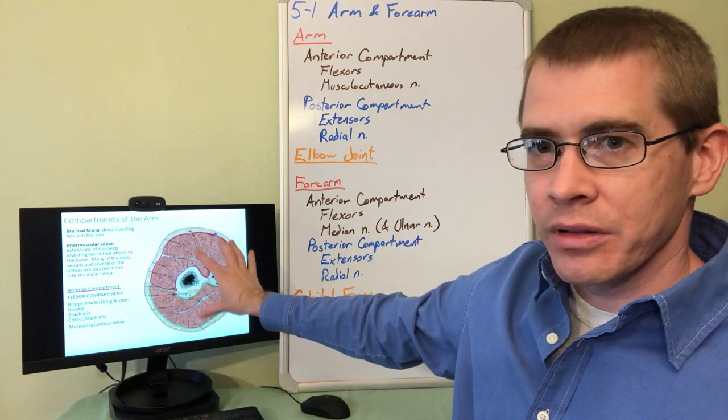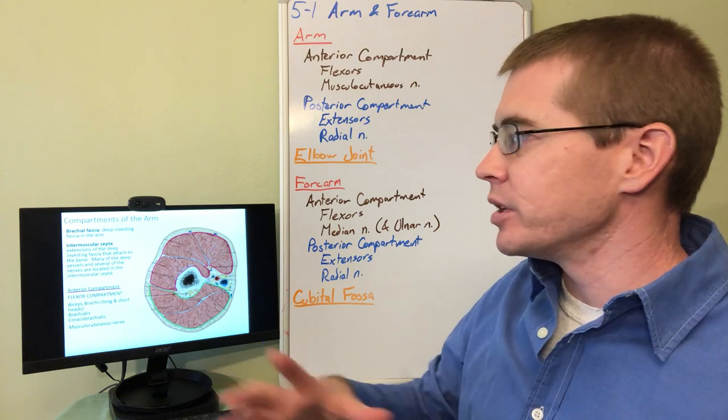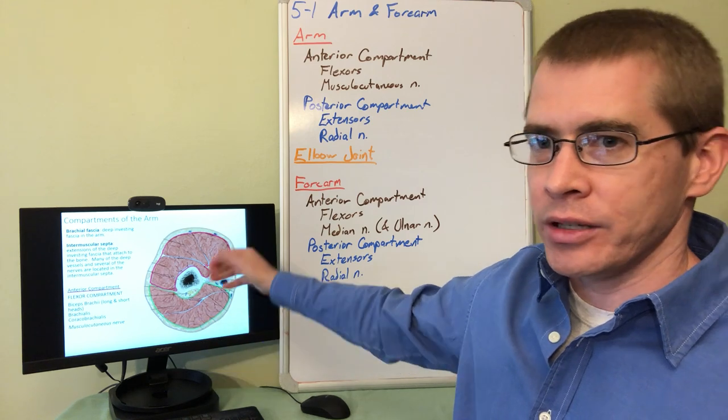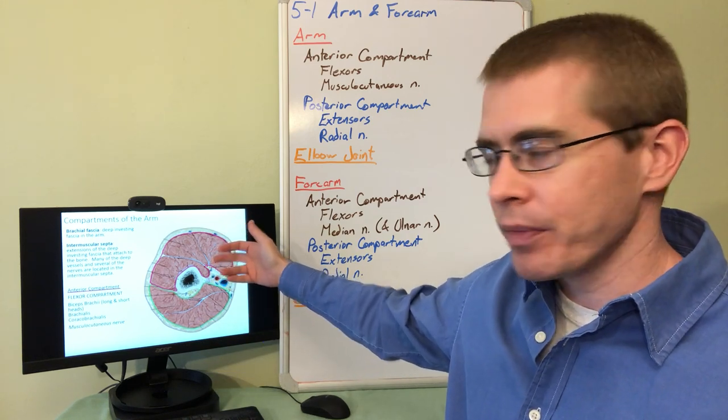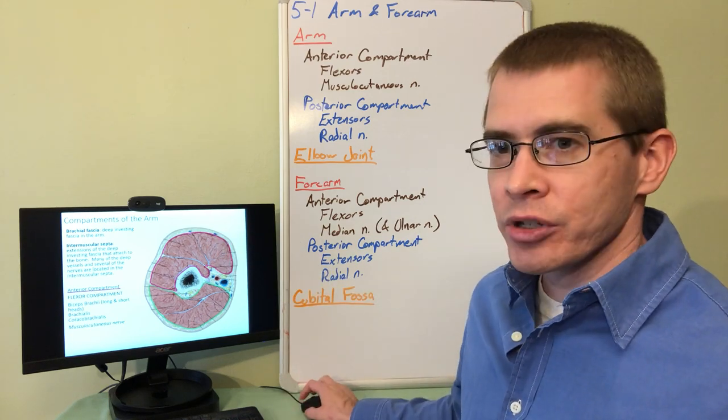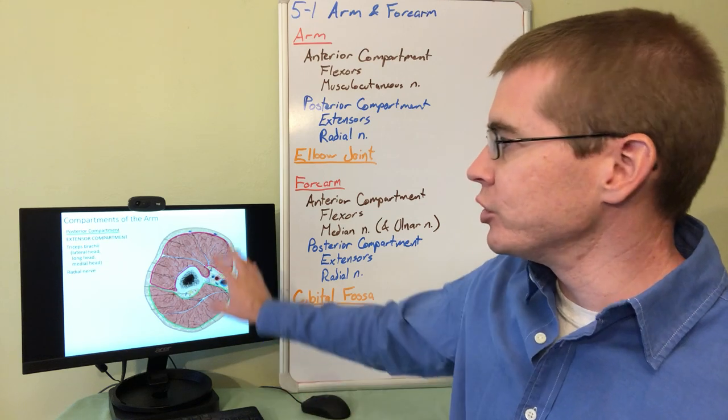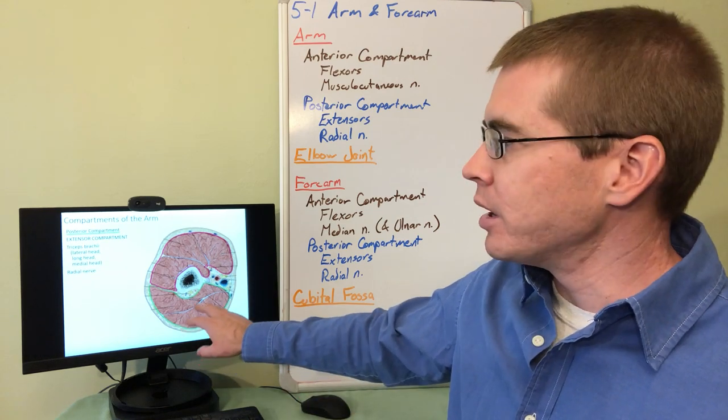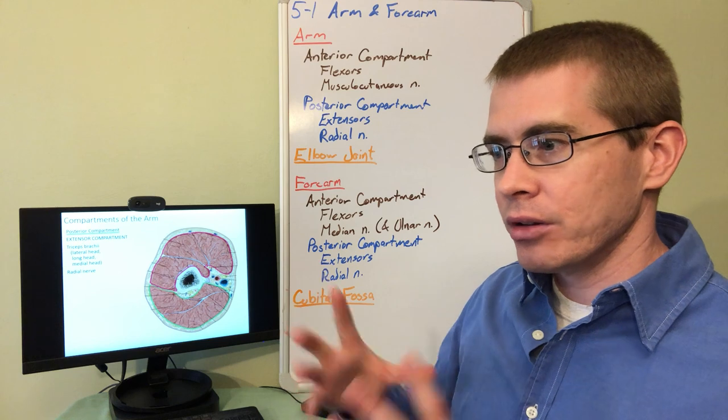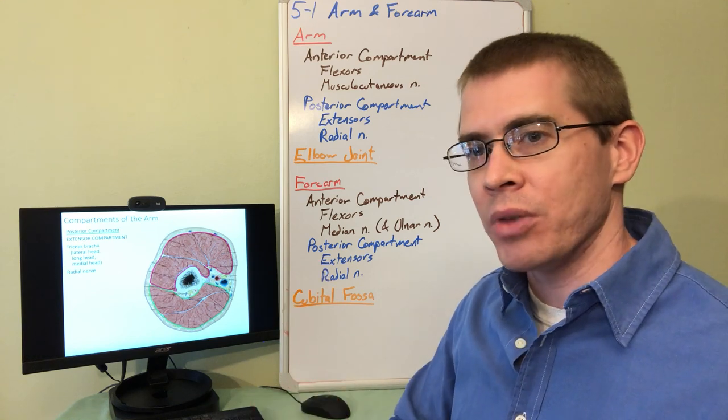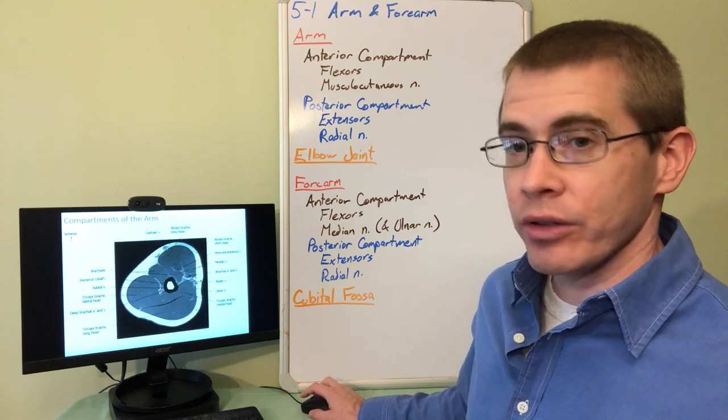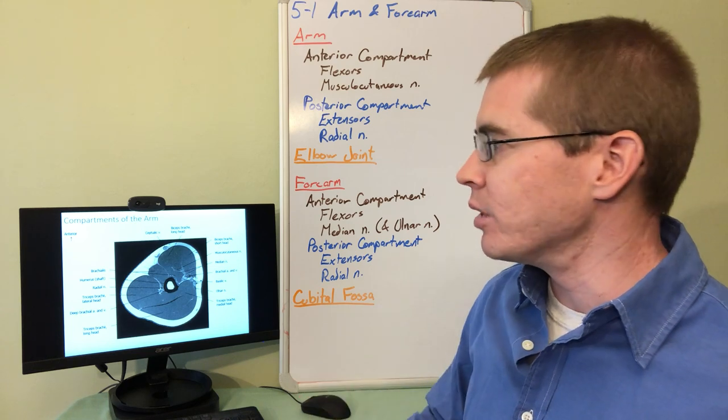The compartments of the limbs, we separate those into these individual compartments. So here in the arm we have an anterior compartment and a posterior compartment. Anterior compartment contains your flexor muscles. It's also innervated by musculocutaneous nerve. So the arm is going to be very easy topic here. Posterior compartment is your extensor compartment innervated by radial nerve. So we can separate these compartments and make these rules about what innervates muscles in individual compartments to make studying this quite a bit easier. But as we'll see, we're going to break those rules on occasion. And those are the things that you'll need to study.